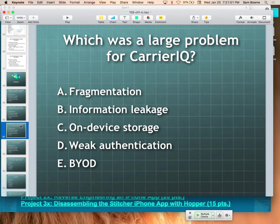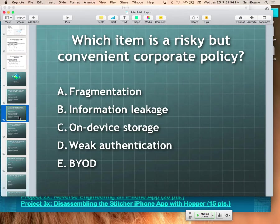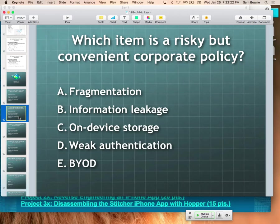One problem with BYOD is people circumvent whatever security is in place in order to use the device, and another is when employees quit and leave. Microsoft's OneDrive with the latest domain controller 2012 R2 has a feature where data in OneDrive is encrypted if it's company data but not if it's personal data. The company data key is tied into your Active Directory login, so when you are terminated you cannot open those files anymore — even if you copied them to your phone, your thumb drive, and your Dropbox, they're all encrypted — but you still have access to your personal data.